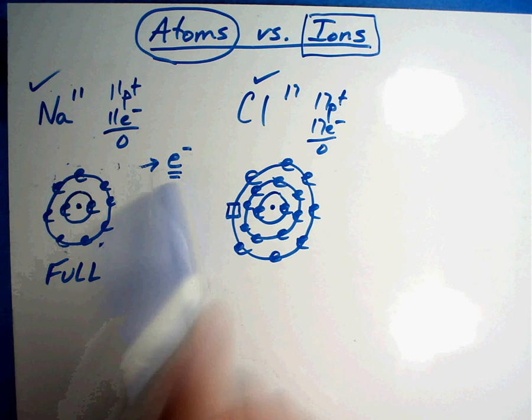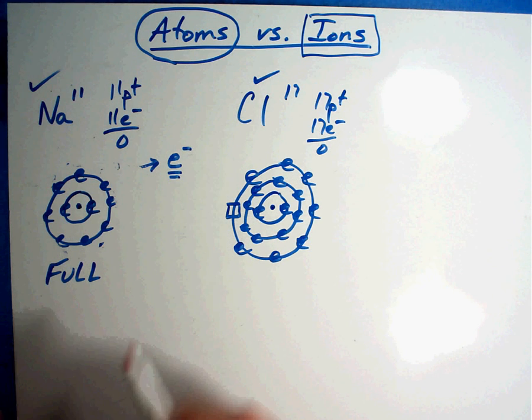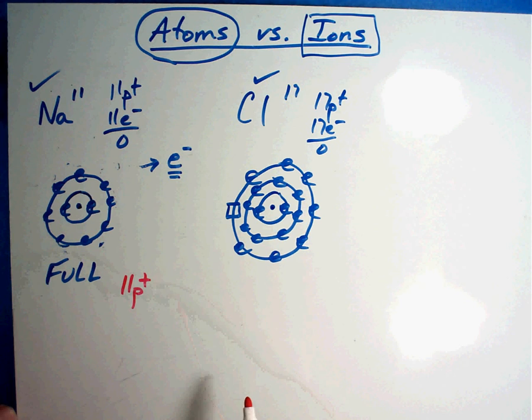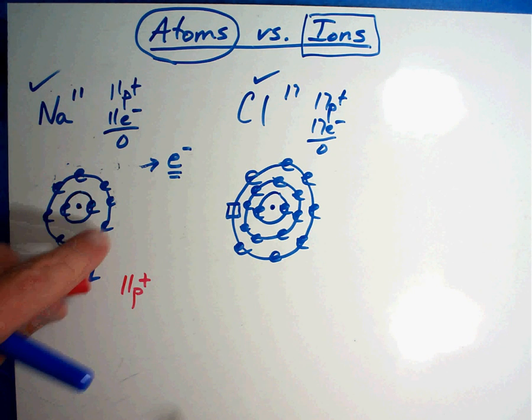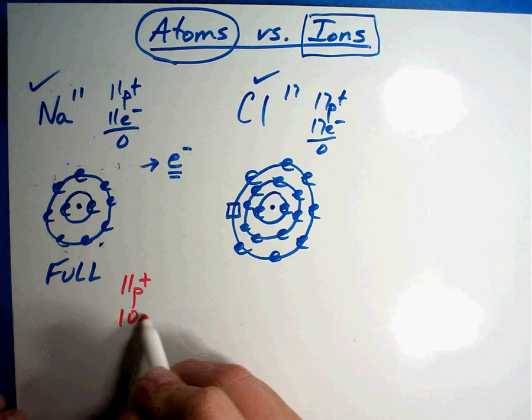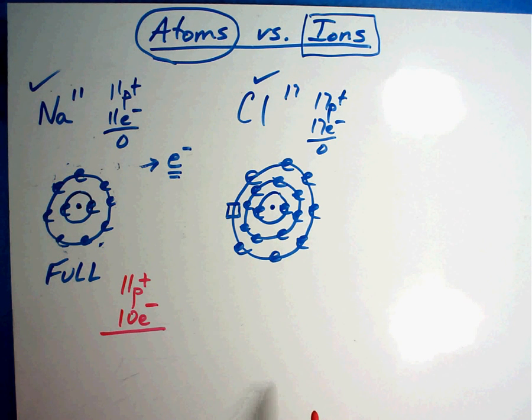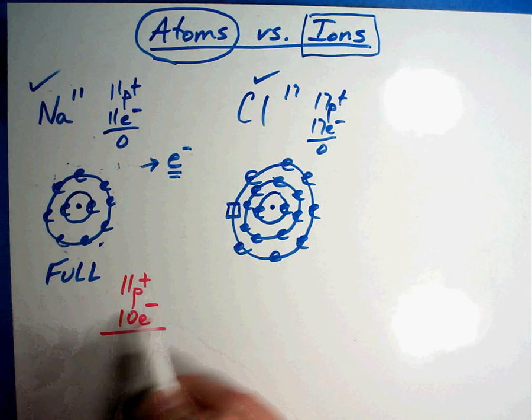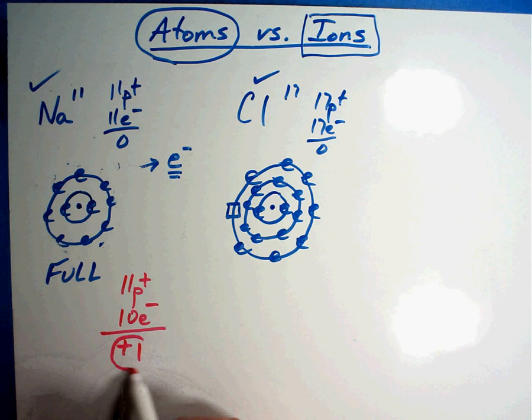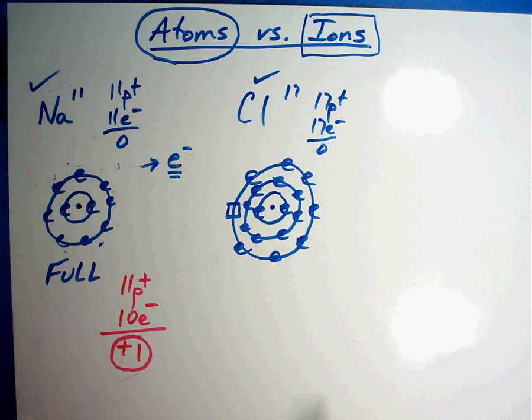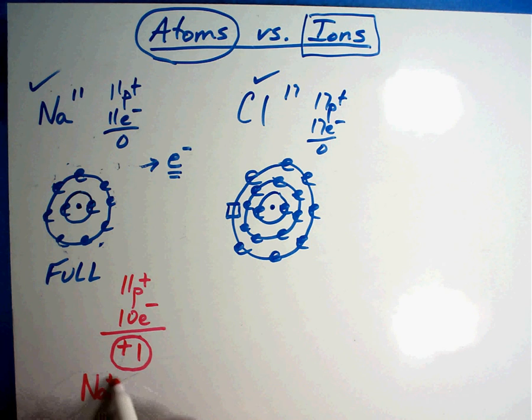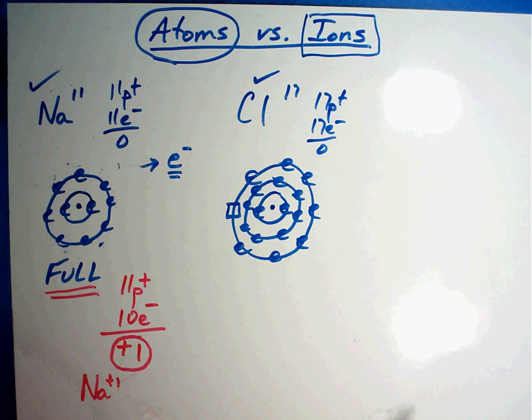Now this guy still has 11 protons - I didn't touch the nucleus. But now he has 10 electrons. He lost one. 11 protons, 10 electrons. 11 pluses, 10 minuses. He now has a plus one charge. Na has a plus one charge. Is he okay with that? Yes, because he's full. That's what he wants is to be full.